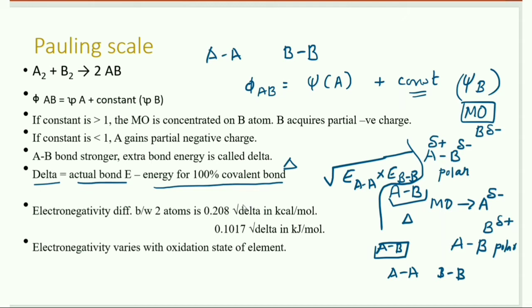This is very important: the electronegativity difference between two atoms equals 0.208 × √δ, where δ is the extra bond energy in kilocalories per mole. If delta is in kilojoules per mole, the formula becomes 0.1017 × √δ.